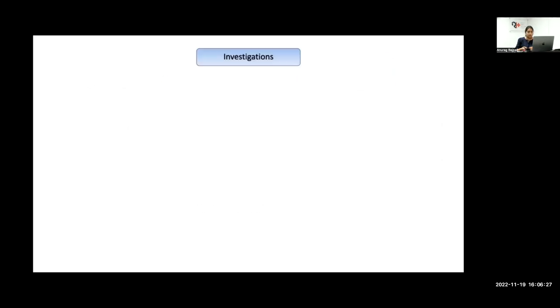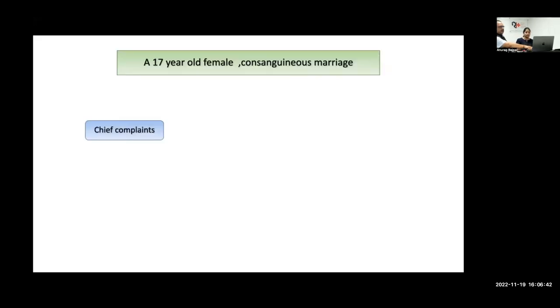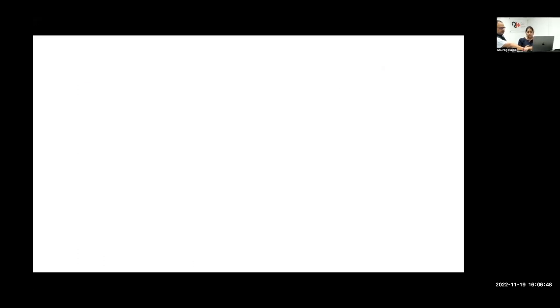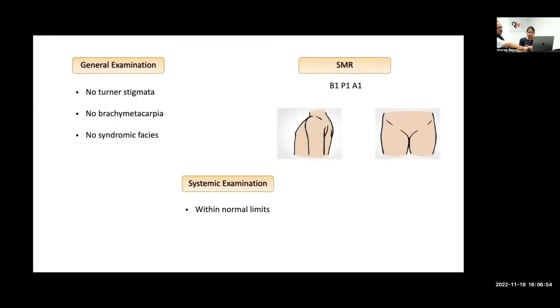So we have a tall girl with primary amenorrhea, no breast development, and no pubic hair development. The question is: what are we dealing with? Tall stature with primary amenorrhea is associated with four conditions: AIS, XY gonadal dysgenesis, aromatase deficiency, and estrogen receptor resistance. A biosynthetic defect such as 17β-HSD could also be considered but there was no pubertal virilization in this case.